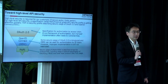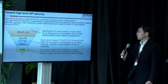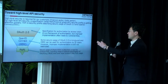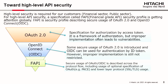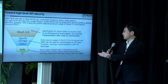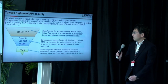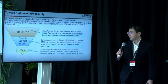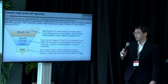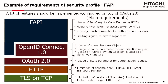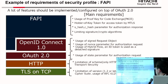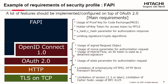FAPI is a security profile describing secure usage of OAuth 2.0. OAuth 2.0 is a specification, but it is a framework, so improper implementation often leads to security holes. On top of OAuth 2.0, OpenID Connect is defined, however improper implementation is still not restricted. On top of them, FAPI is defined. Secure usage of OAuth 2.0 and OIDC is described across the protocol flow. This figure shows requirements described in FAPI — some extra specifications of OAuth 2.0 are required, such as PKCE, limiting signature and crypto algorithms, and et cetera.